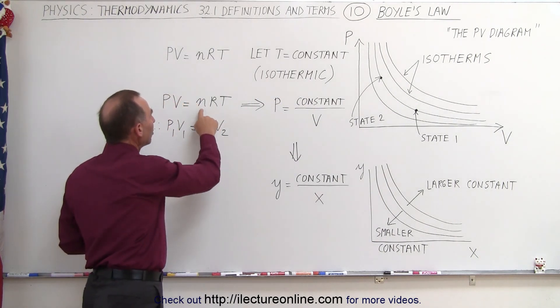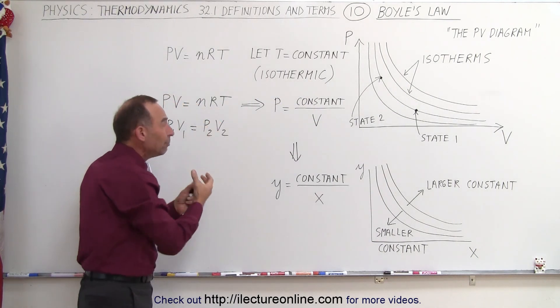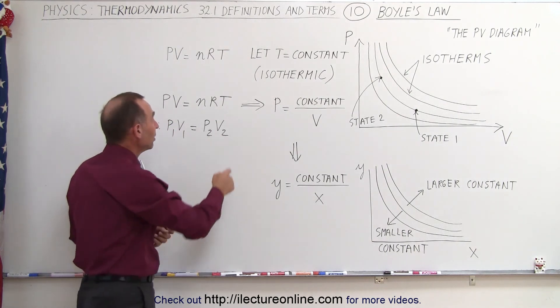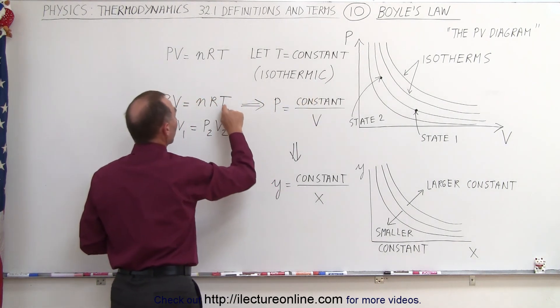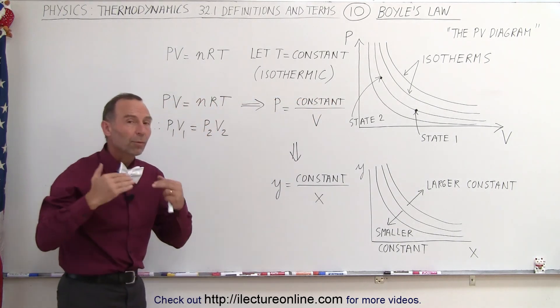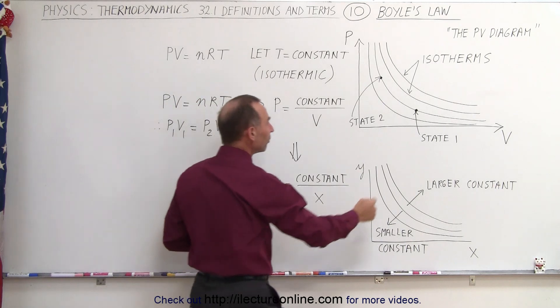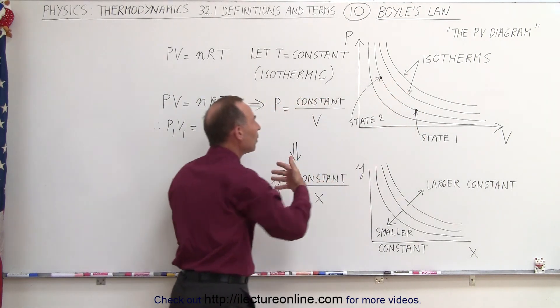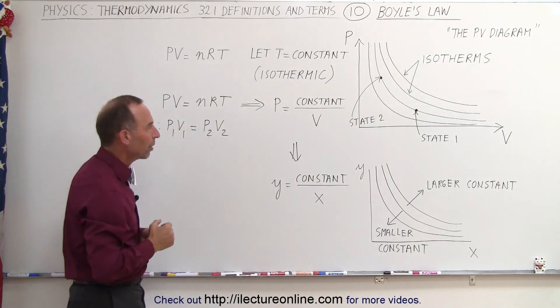So nR times T can be a different constant. When T becomes larger, this constant becomes larger. When T becomes smaller, this constant becomes smaller. As long as it remains constant in going from one state to another state, we have what we call an isothermic process.